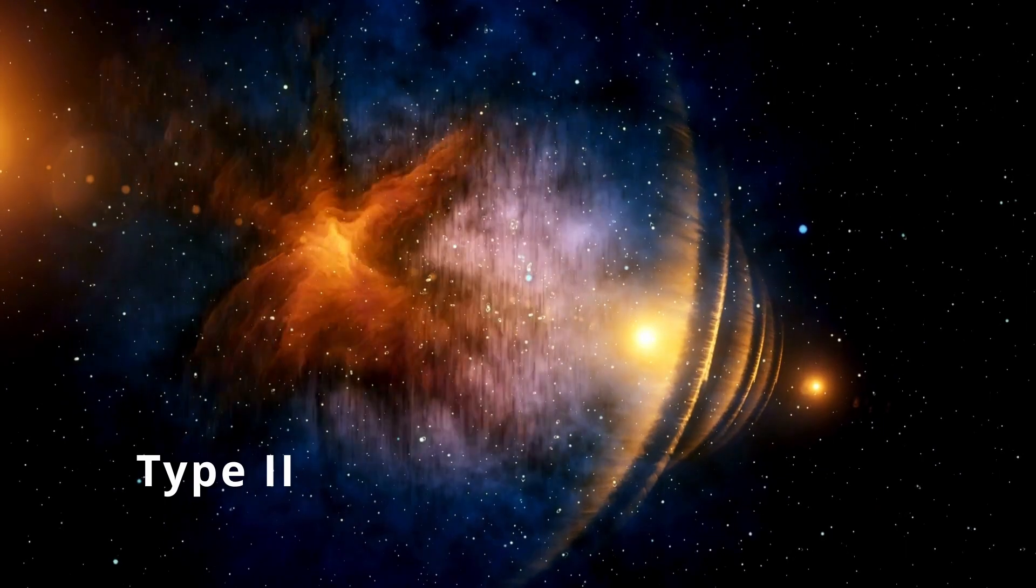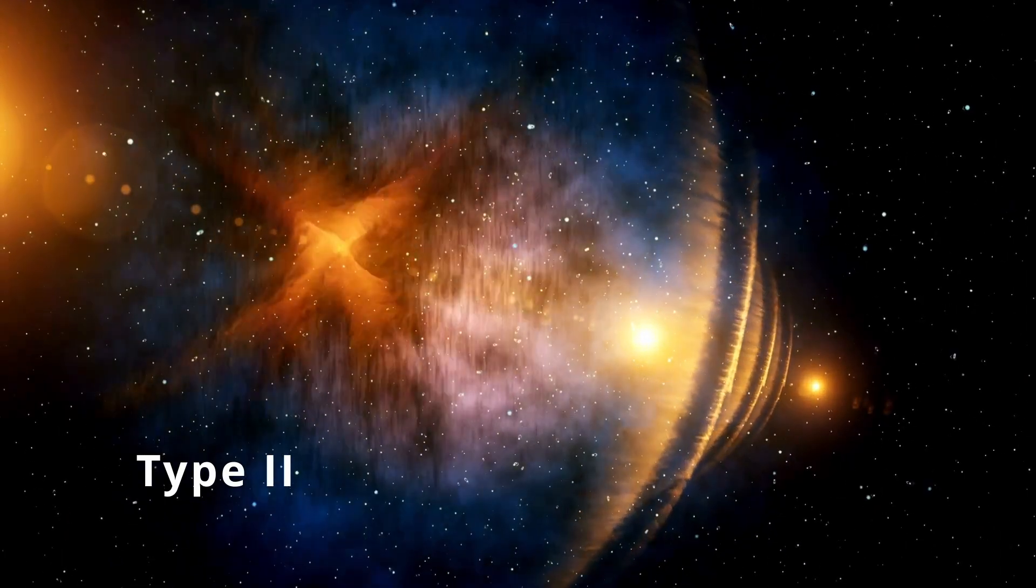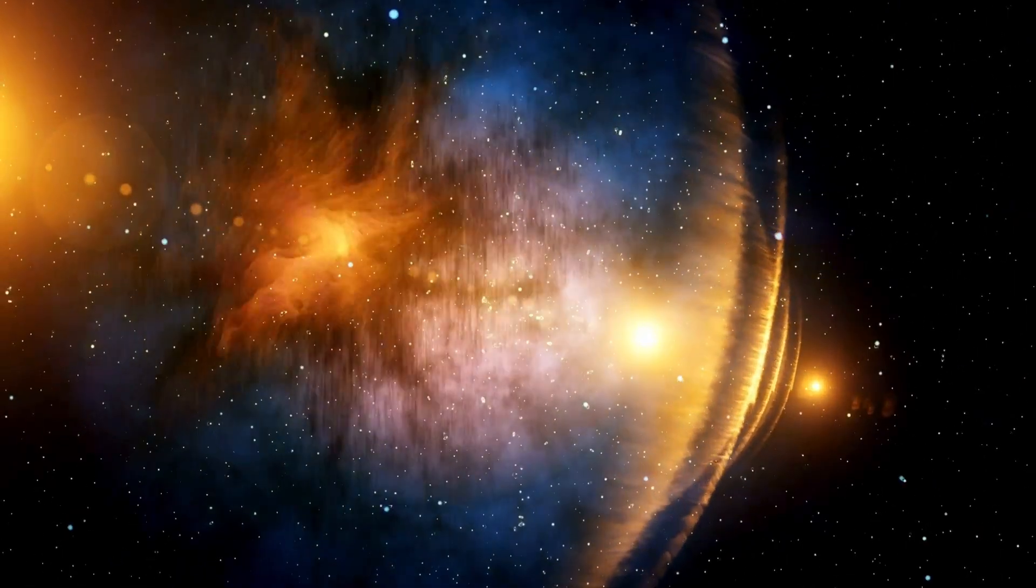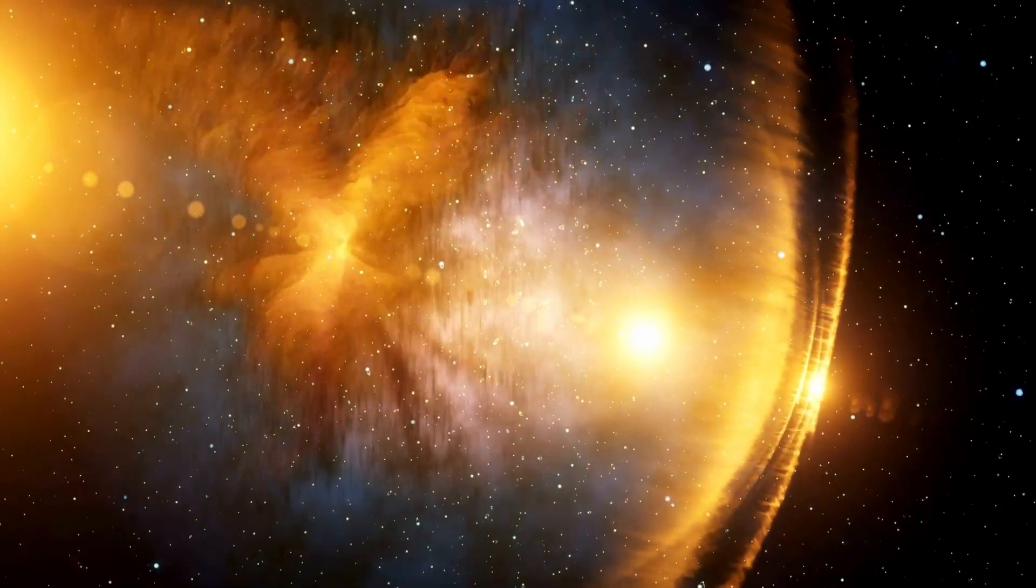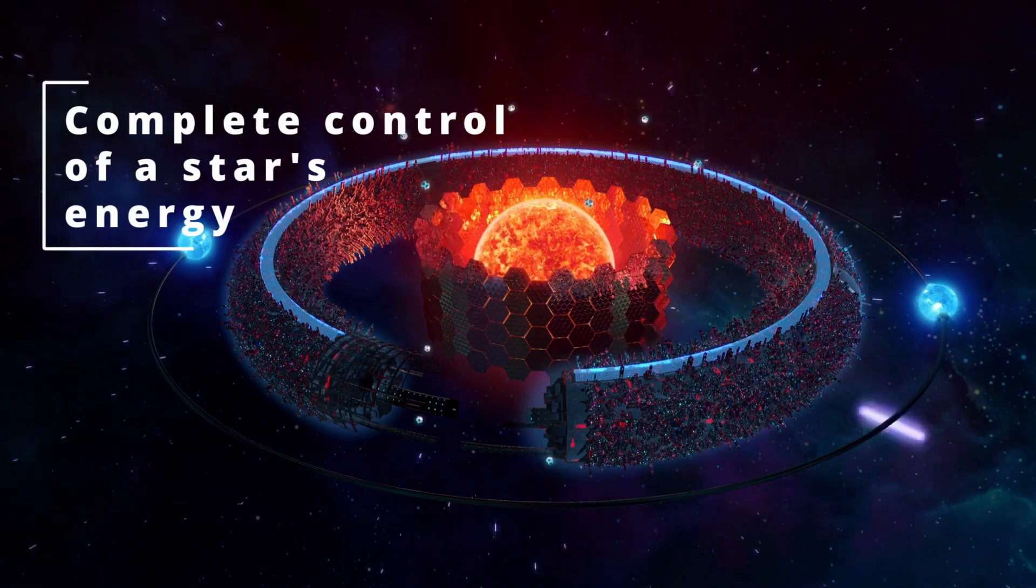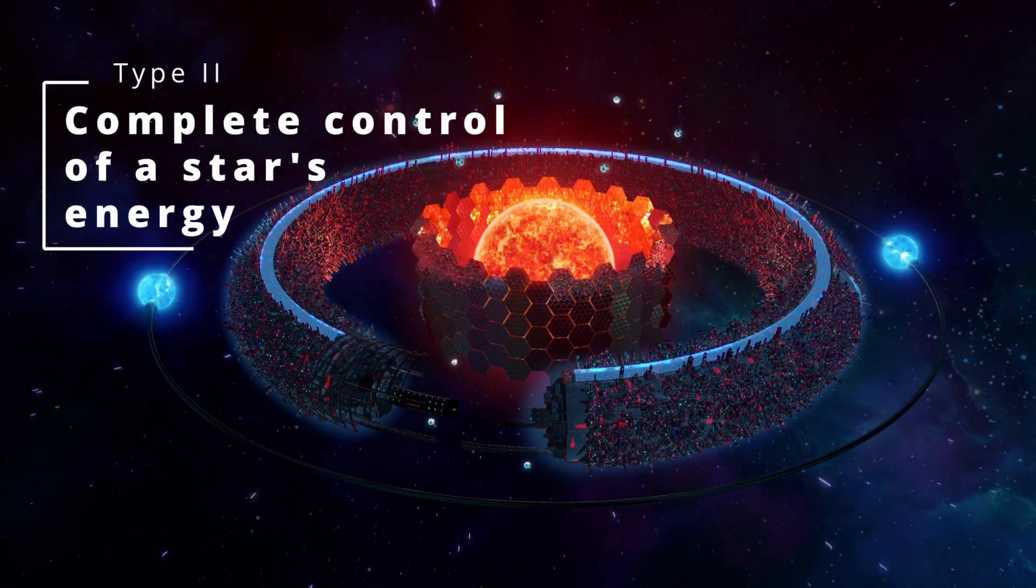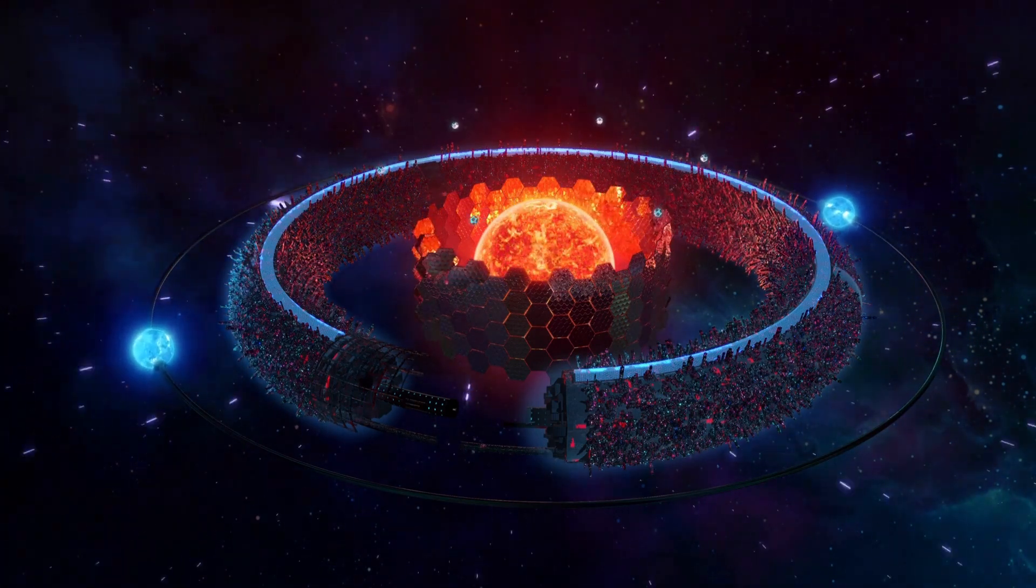A Type II civilization on the Kardashev scale is one that has achieved the ability to harness the energy of its own star. This is a much more advanced level of technological development than a Type I civilization, as it would require the ability to harness and control the enormous amounts of energy produced by a star.